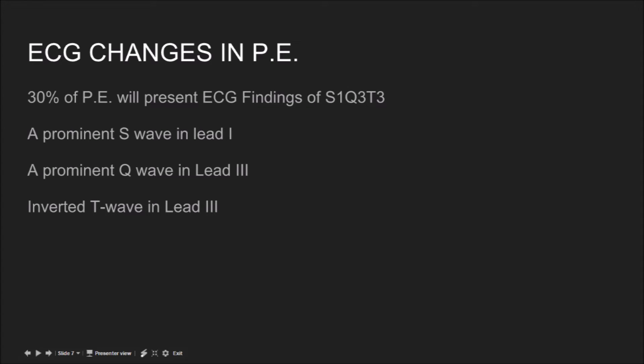So what are the ECG changes in PE? If you want to confirm this diagnosis — because you've got chest pain and shortness of breath — how do you say this is probably a PE? Well, three out of ten PEs are going to present with a specific ECG finding called S1Q3T3. The actual name of this syndrome is cor pulmonale. It presents with a prominent S wave in lead one, a prominent Q wave in lead three, and an inverted T wave in lead three.